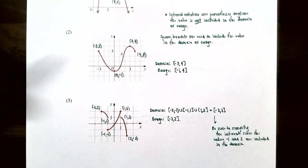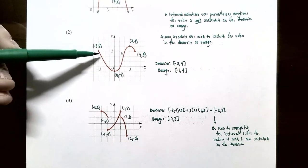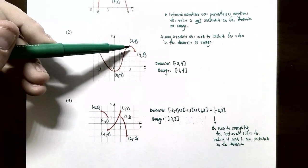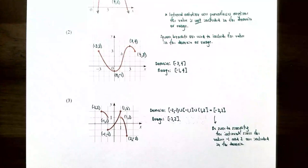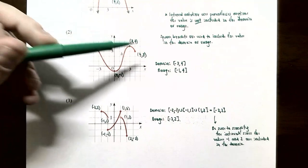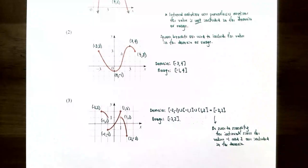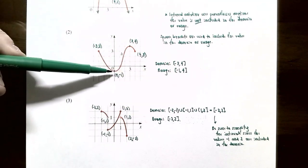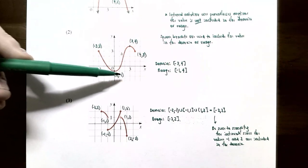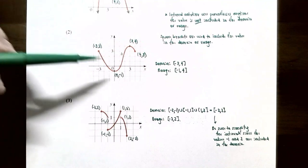For graph 2, the graph stops at a closed point at (−3, 3) on the left and a closed point at (4, 3) on the right, passing through (0, −1) and reaching a high point of (3, 4). The domain goes from x=−3 to x=4 with both endpoints included: [−3, 4]. The smallest y value is −1 and the largest is 4, both included, so the range is [−1, 4].